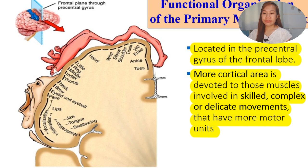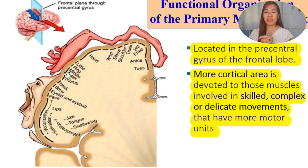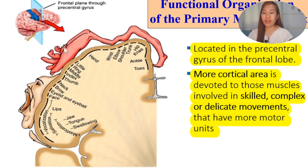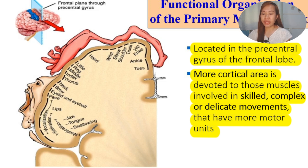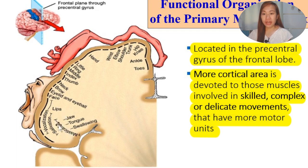The hands have very skilled, complex, and delicate movements - there are a lot of things we can do with our hands. That's why the brain devotes more cortical area to control the hand. As you can see in this picture, it's very large. Aside from that, we also have the face - specifically the mouth - which has more cortical areas assigned, for vocalization, salivation, mastication. The jaw, tongue, and swallowing also have more cortex assigned.